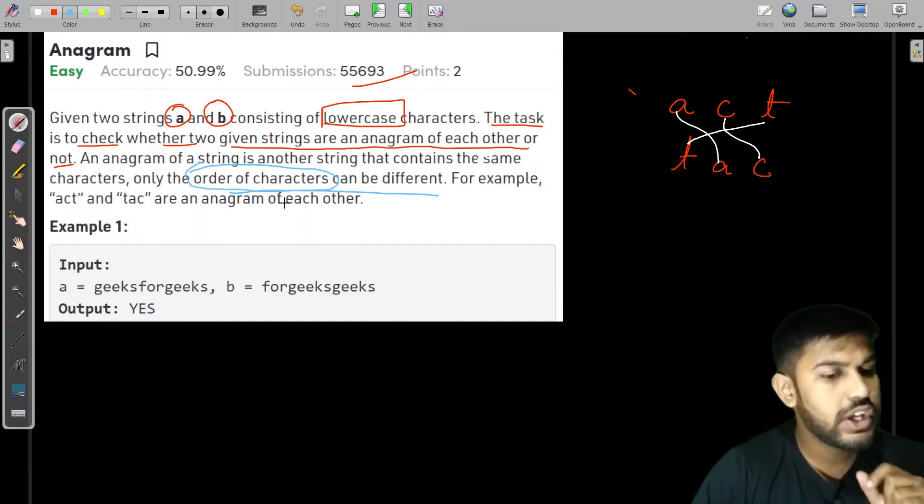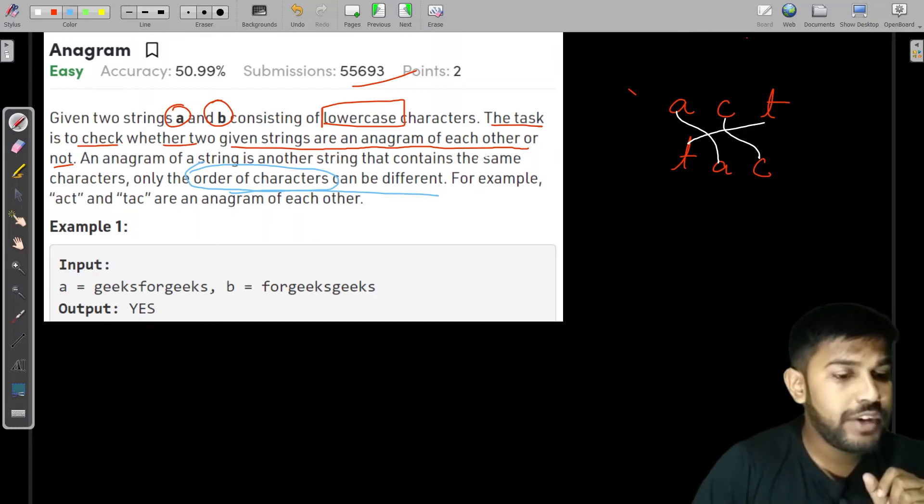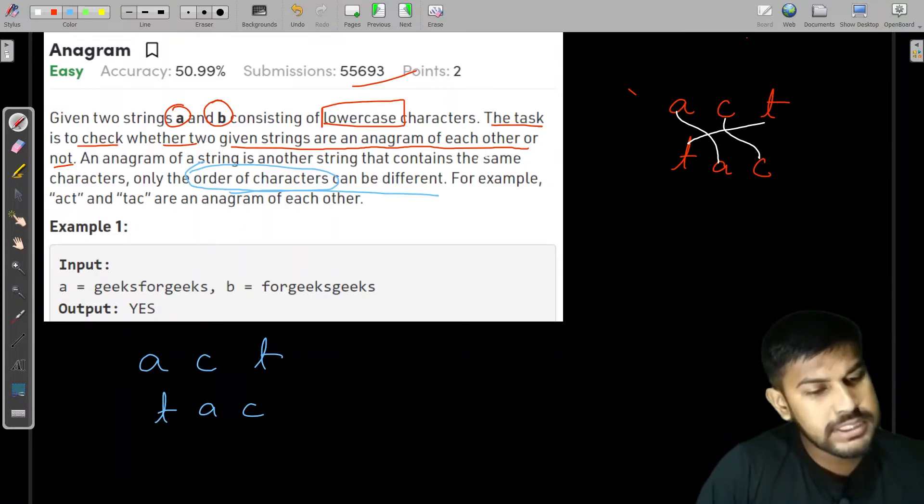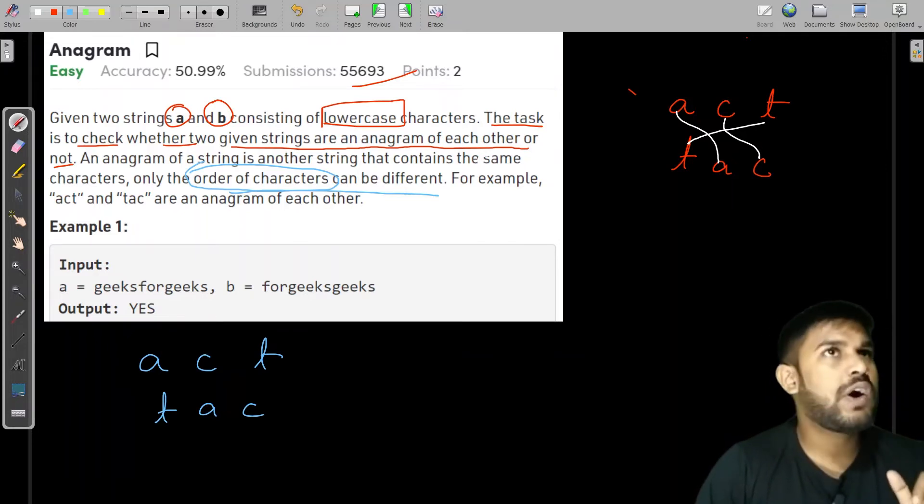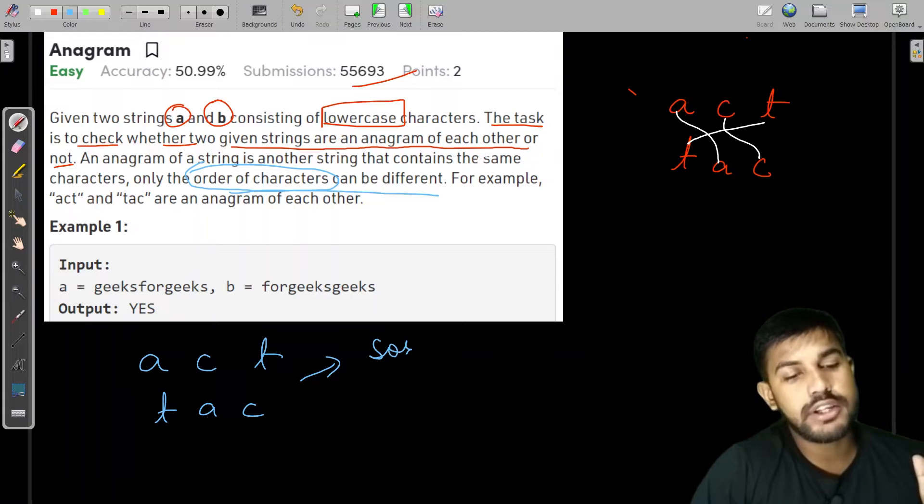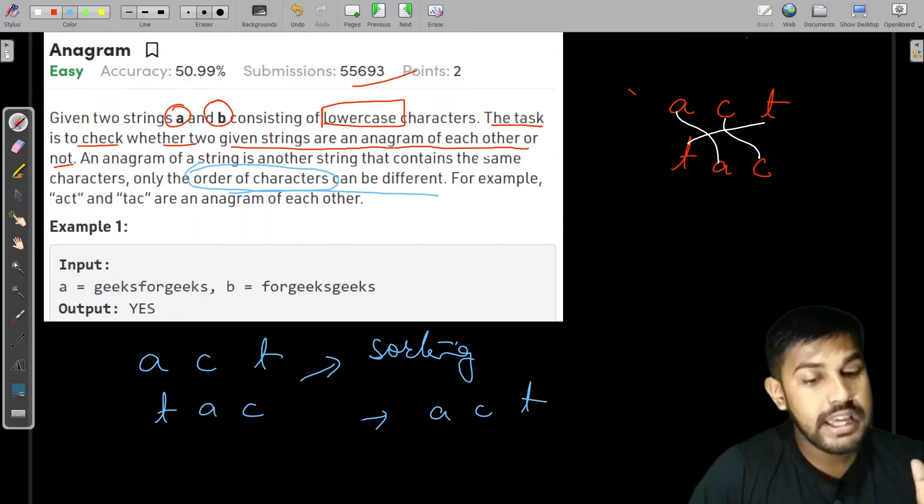This is written in the question itself. So what we can do is if we are given act and tack, can we make the order same for both? If we talk about ordering in programming, the first thing that comes in our mind is sorting. After sorting this would become A, C and T and this would also become A, C and T.